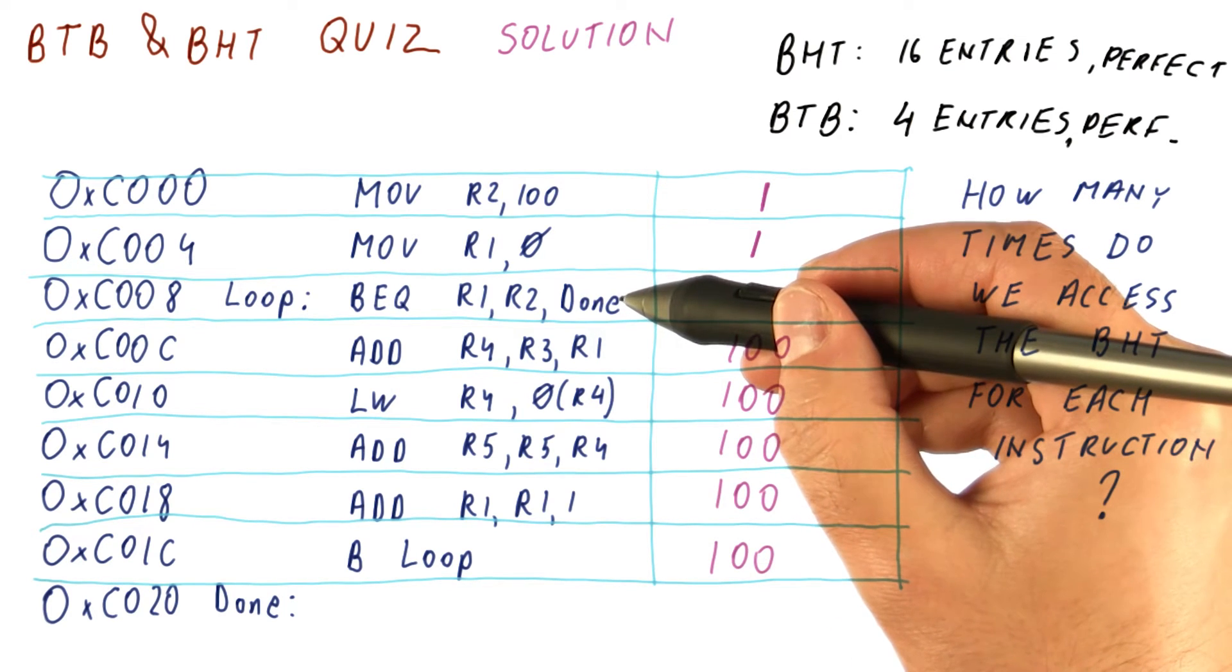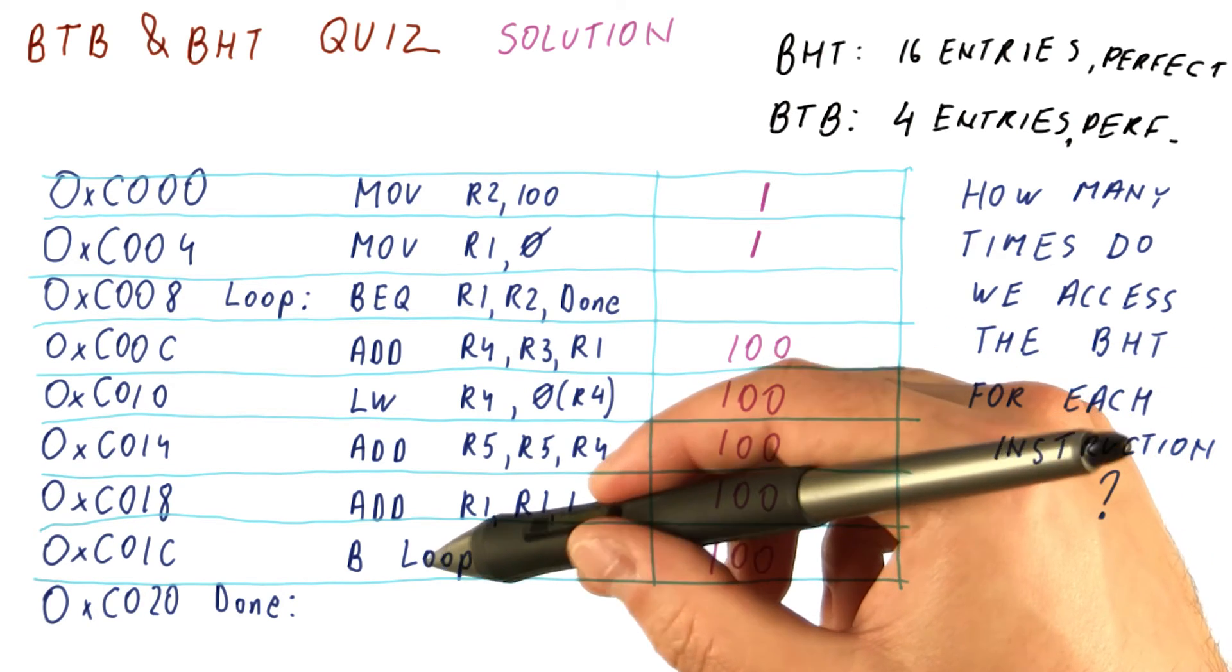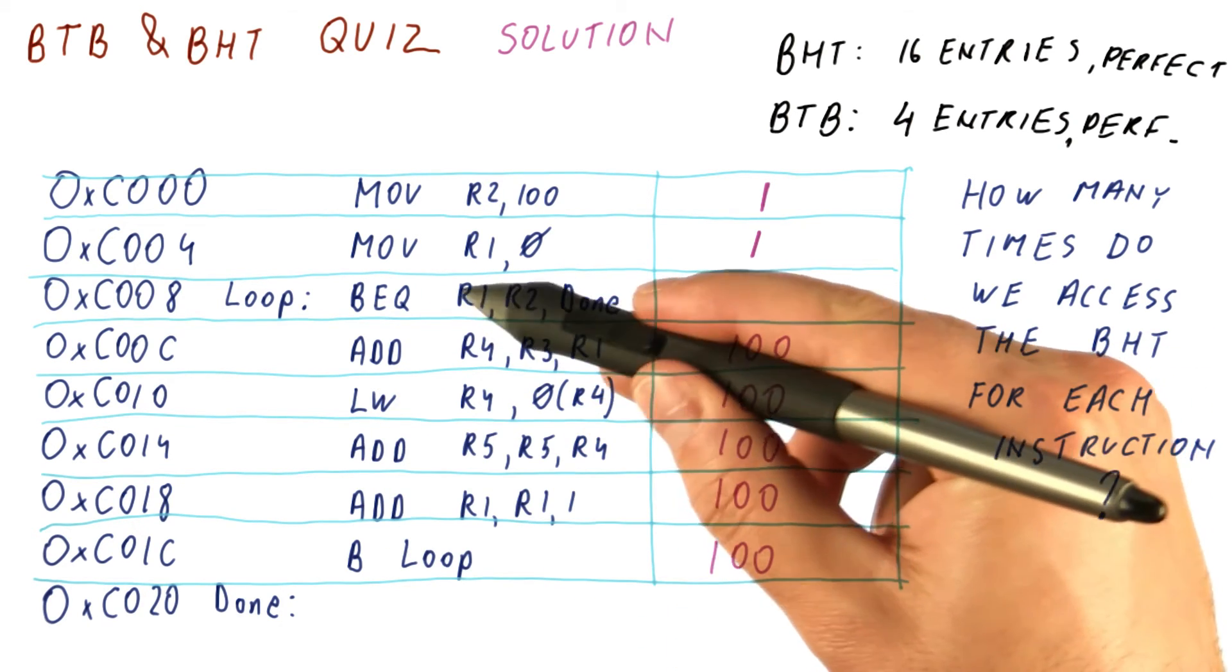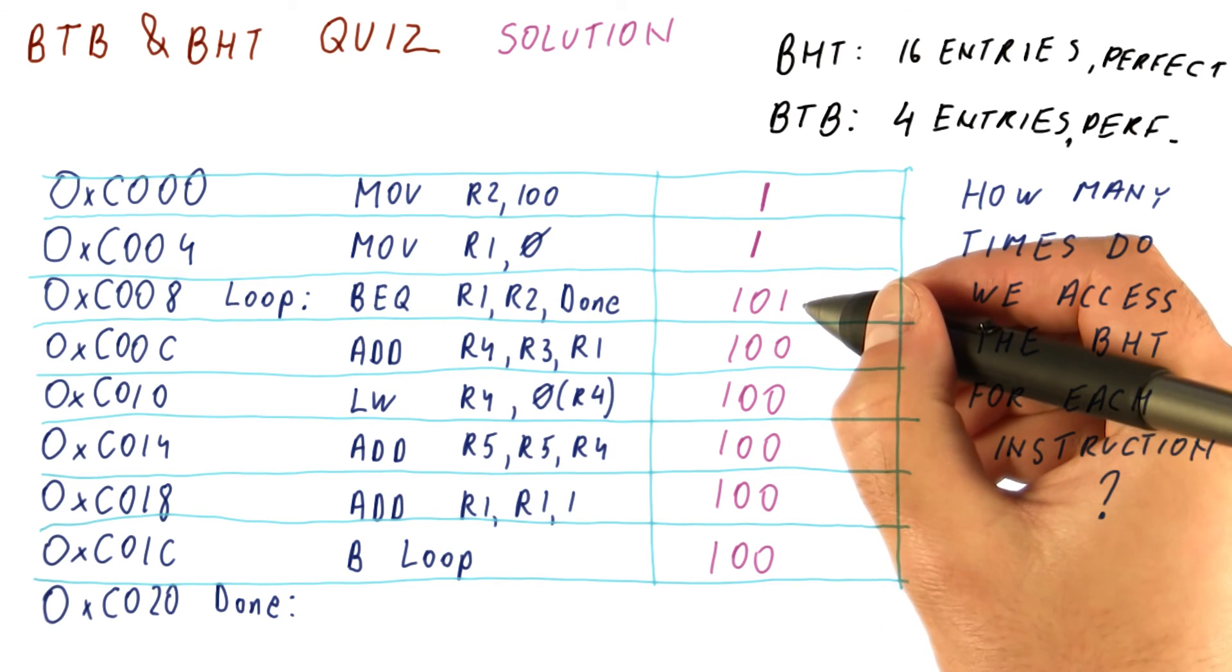This instruction here executes 100 times when we are staying in the loop, and once we for the 100th time jump back, it executes once more in order to exit the loop. So this instruction executes 101 times.